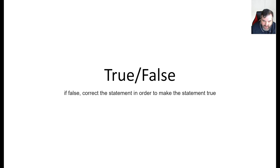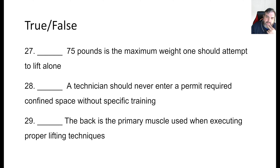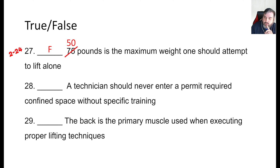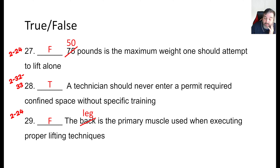Now my favorite section — true/false, and if it's false we correct it to make it true. 75 pounds is the maximum weight one should attempt to lift alone — that would be false; the best answer is 50. A technician should never enter a permit-required confined space without specific training — that is true. The back is the primary muscle used when executing proper lifting techniques — you actually do not want to use your back; you want to use your legs. The leg is the primary muscle you should rely on.